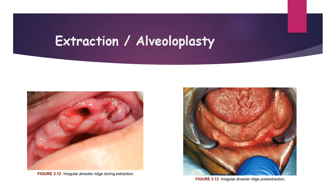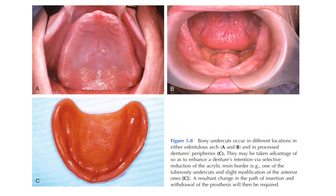The first procedure is extraction and alveoloplasty. Irregularities of the alveolar ridge found either at the time of extraction or after healing both require recontouring before final prosthetic construction. The first picture shows an irregular alveolar ridge during extraction and the second picture shows the irregular alveolar ridge post-extraction.